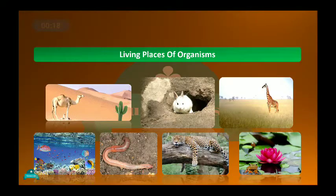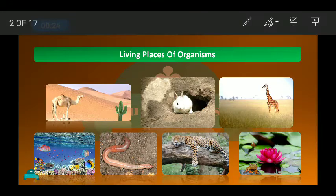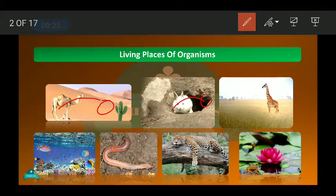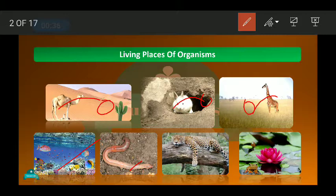Before proceeding with today's class, let's quickly revise what we have learned so far. We have learned about different habitats of different animals, like the desert habitat of the camel, the burrow of the rabbit, the grassland habitat of the giraffe, similarly aquatic habitat, then the earthworm, then the arboreal habitat, and again aquatic habitat.